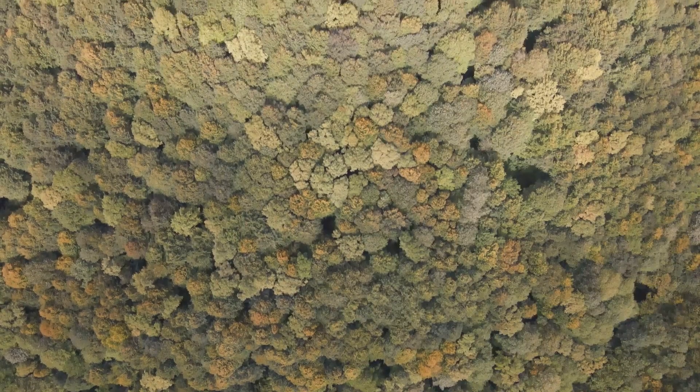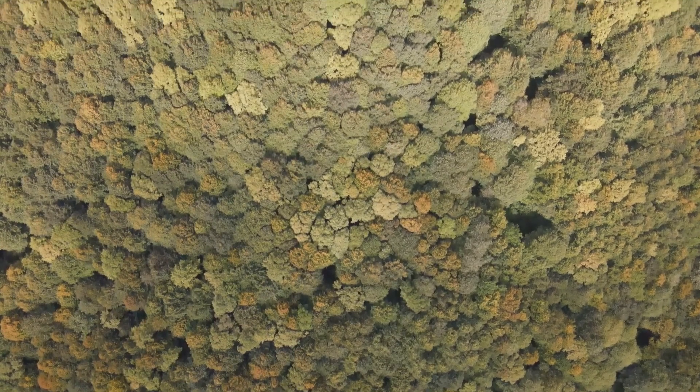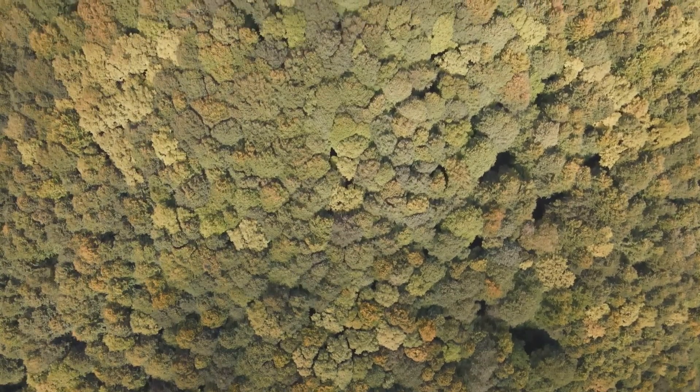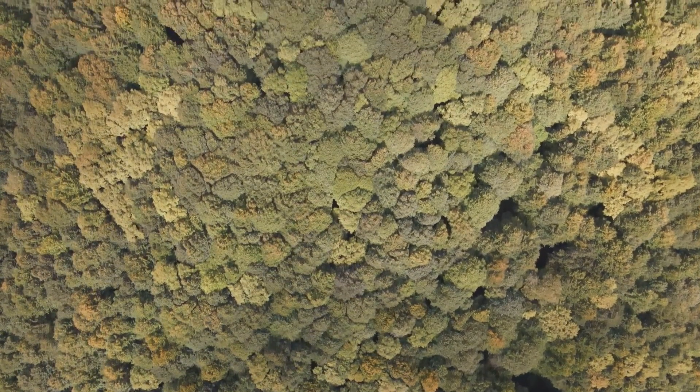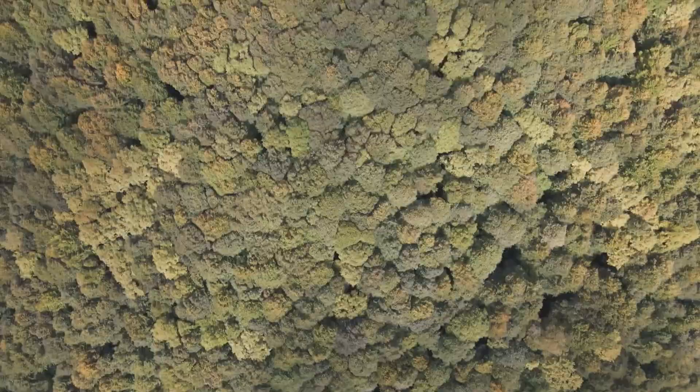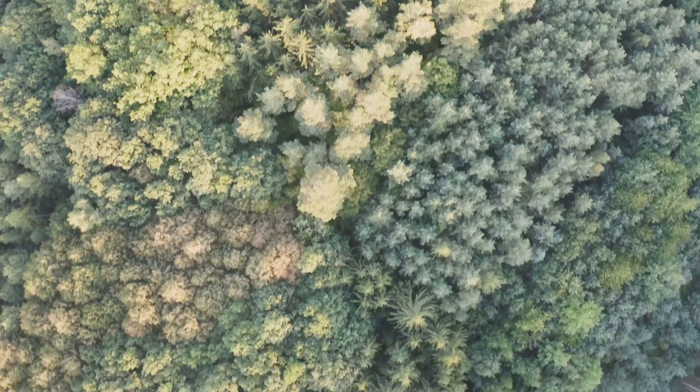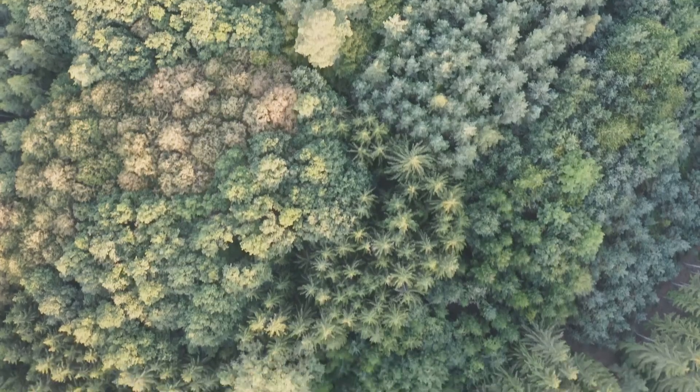Imagine a tree. The trunk is the central idea or the core subject you're dealing with. From this trunk, branches sprout, representing the main topics related to the central idea. Further, smaller branches or sub-branches emerge from these, symbolizing the subtopics. This structure, in essence, is what a mind map looks like.